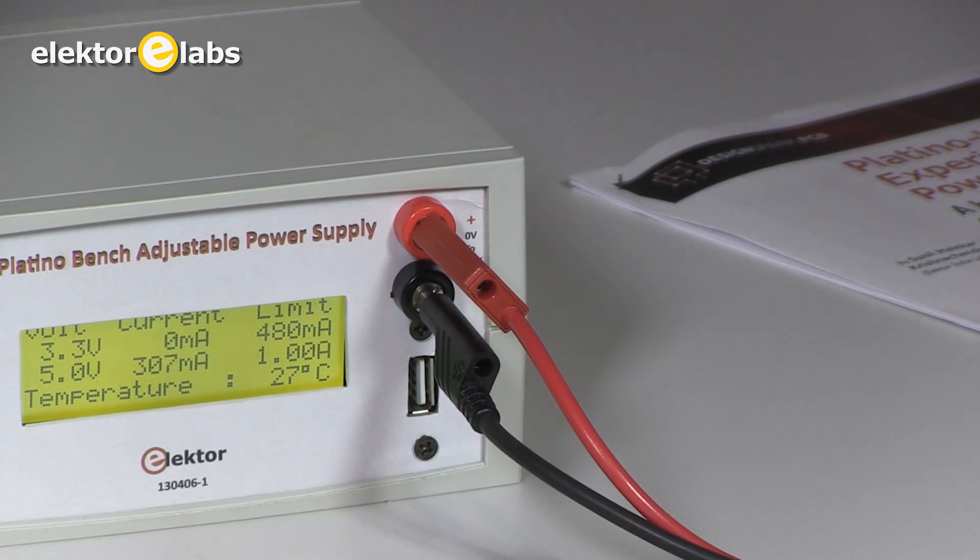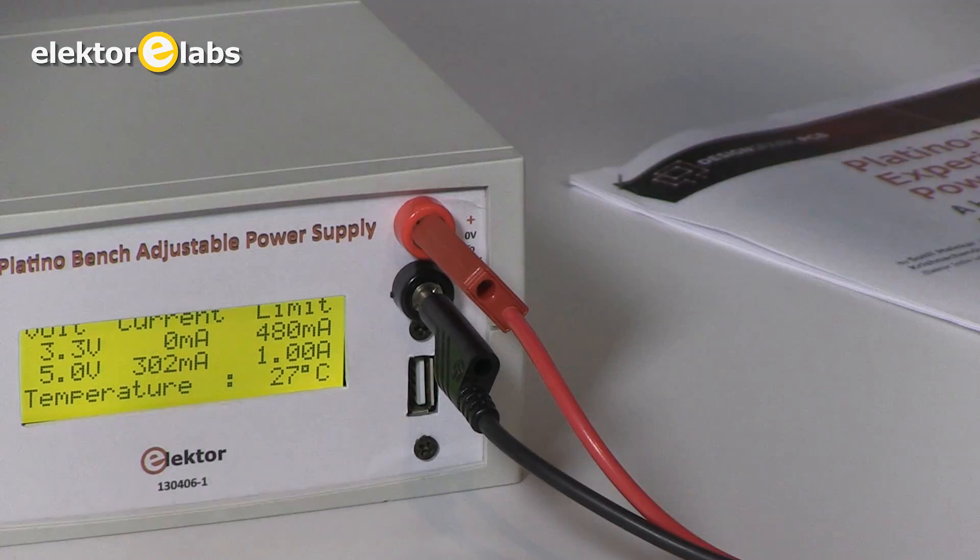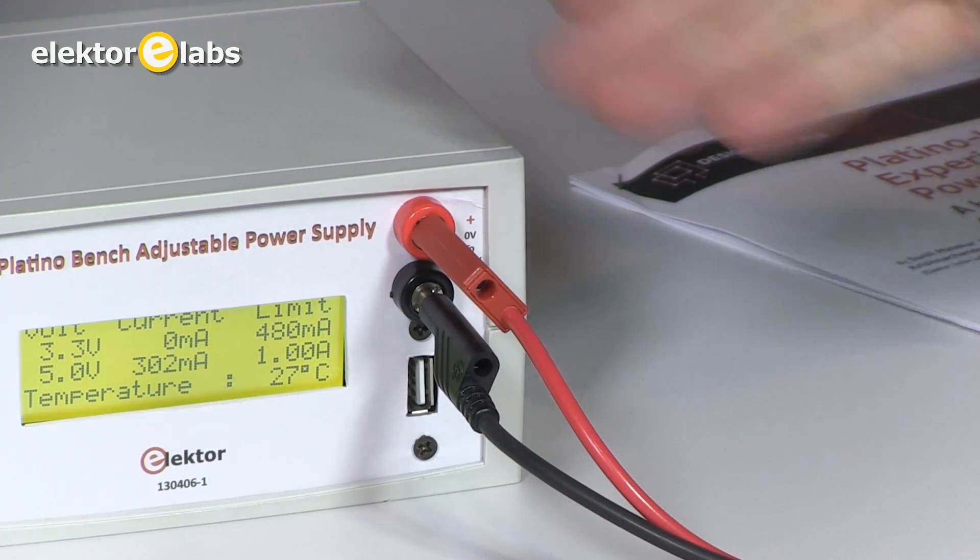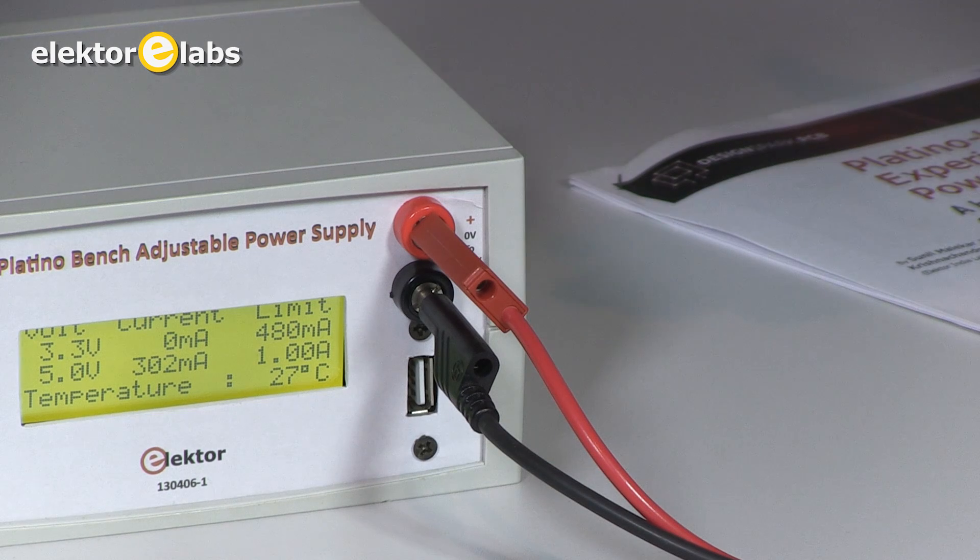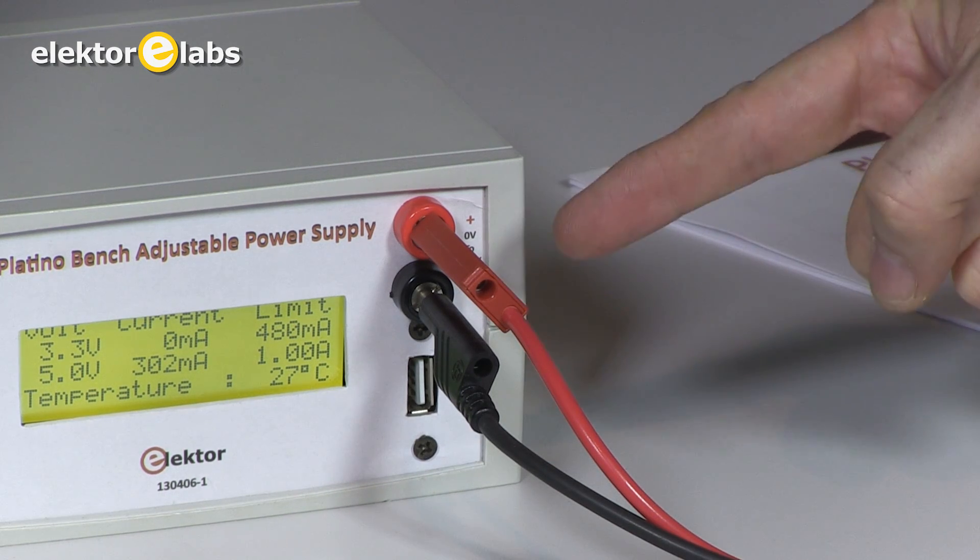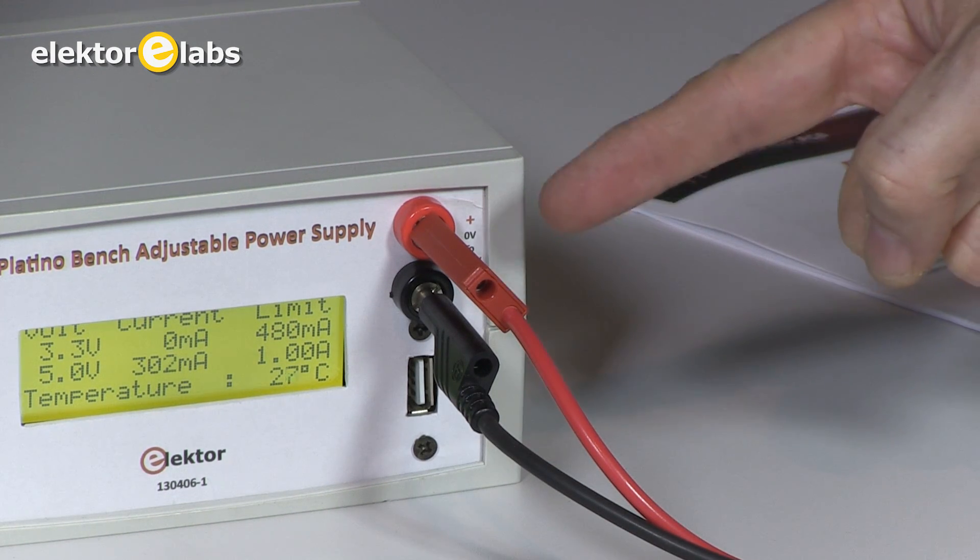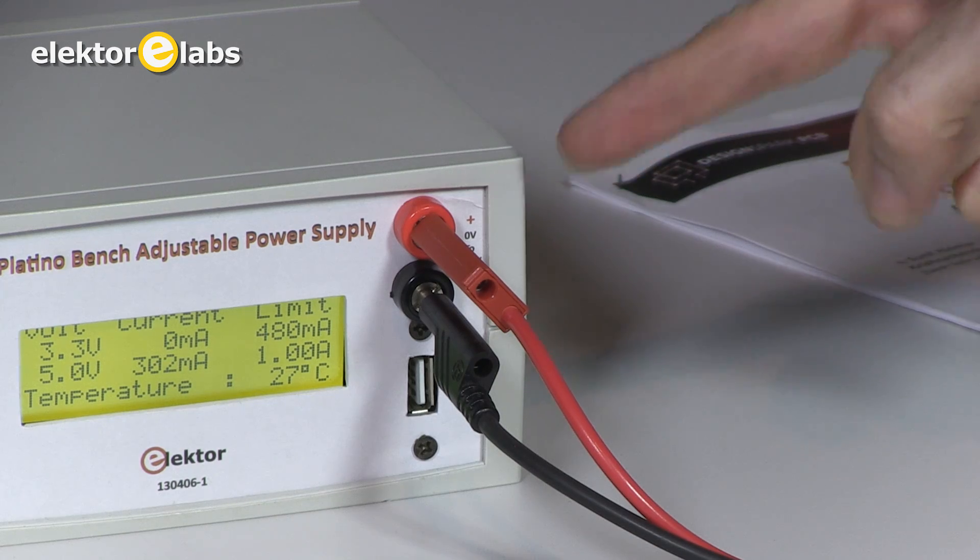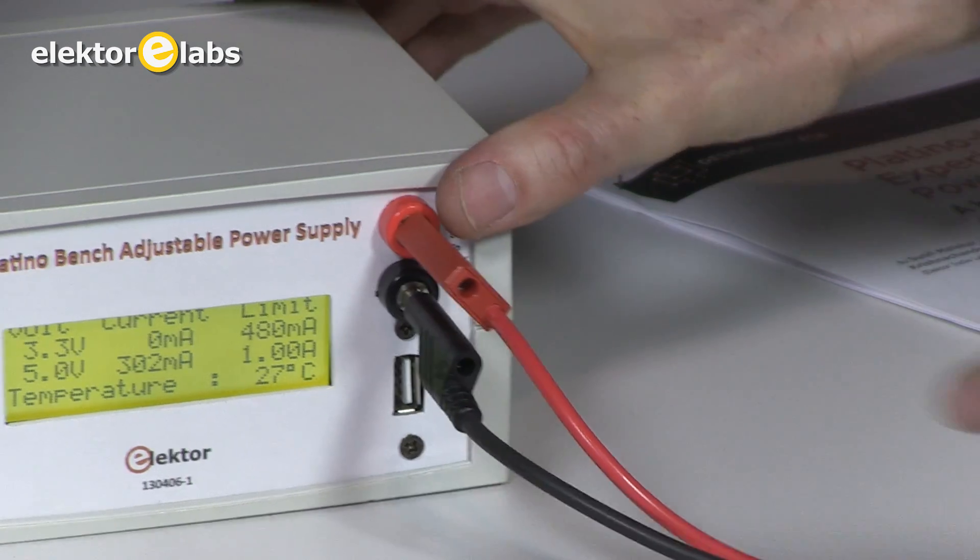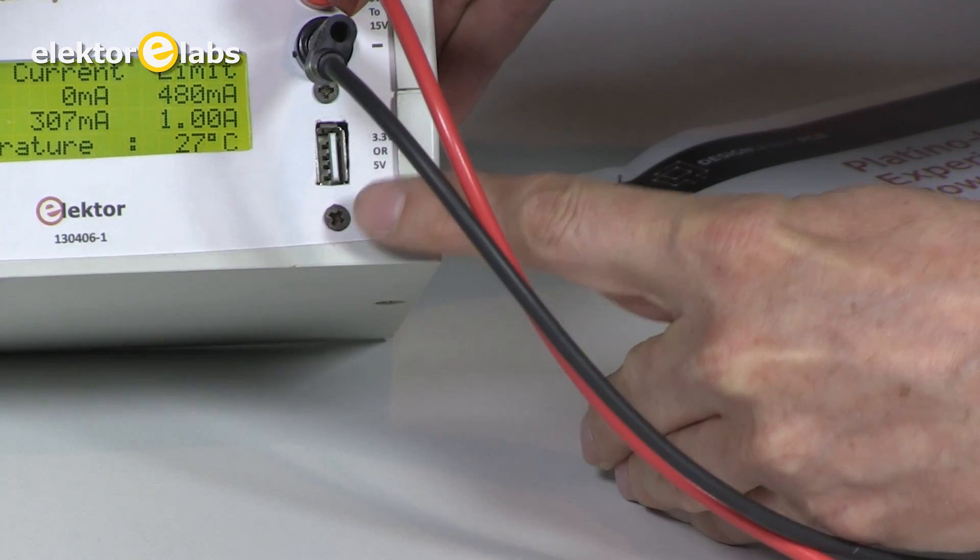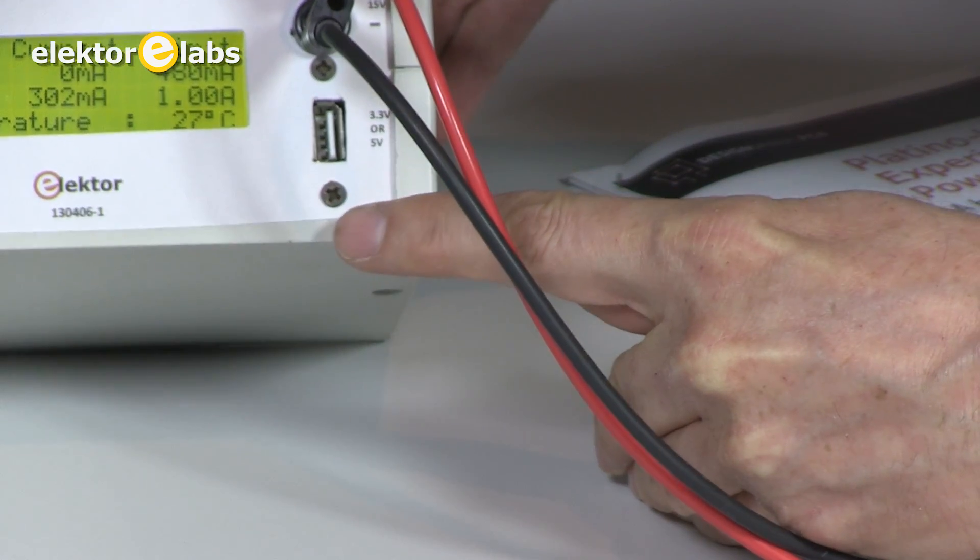We have a yellow display with four lines of 20 characters, which shows the instantaneous current on the two outputs. There are two outputs: this is the adjustable one which goes from 15 volts at max one amp.